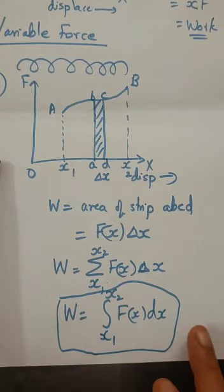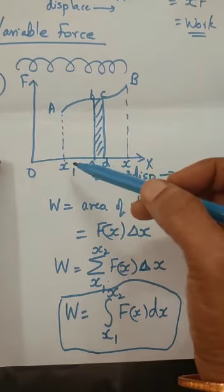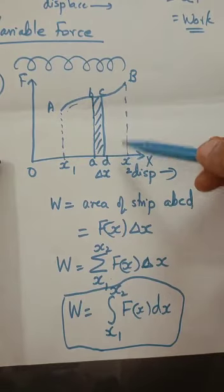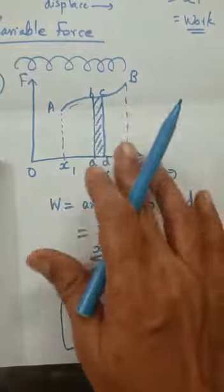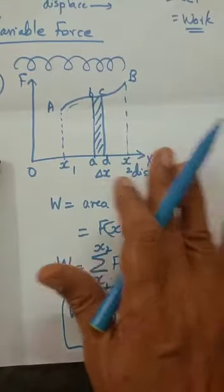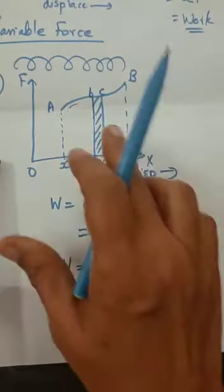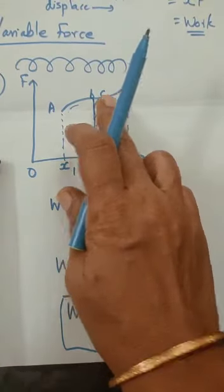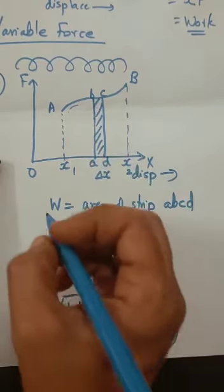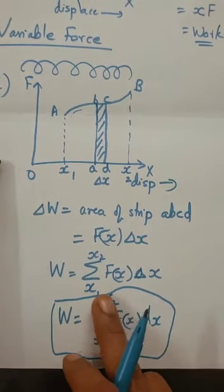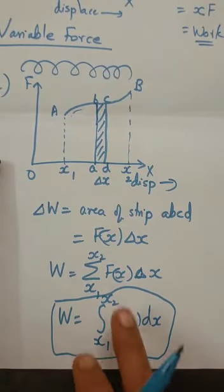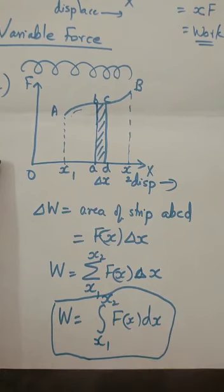The total work done W equals the integral from x1 to x2 of f(x)dx. This is the area enclosed by the graph, the x-axis, and the two ordinates at x1 and x2. Integration is the repeated summation — it gives the total area, which equals the total work done by the force between x1 and x2.